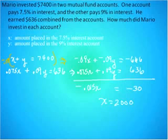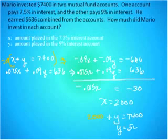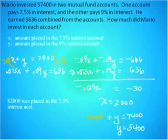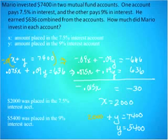So $2,000 is the amount Mario placed in the 7.5% interest account. To find the remaining amount, I substitute into the first equation: 2,000 plus y equals 7,400, subtract 2,000 from each side, and y equals 5,400. So $2,000 was placed in the 7.5% interest account and $5,400 was placed in the 9% interest account. Those are our final answers.